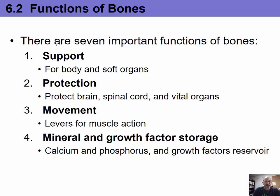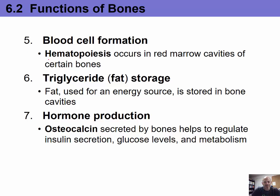There are seven important functions of bone: support for the body and soft organs; protection of vital organs like the brain, spinal cord, heart, and lungs; movement, as the skeleton serves as levers for muscle action; mineral and growth factor storage — the skeleton stores calcium and phosphorus; blood formation, a process called hematopoiesis, which occurs in the red marrow found in certain parts of the bone; fat storage as triglycerides in yellow marrow; and hormone production — osteocalcin is secreted by bones to help regulate insulin secretion, glucose levels, and metabolism.